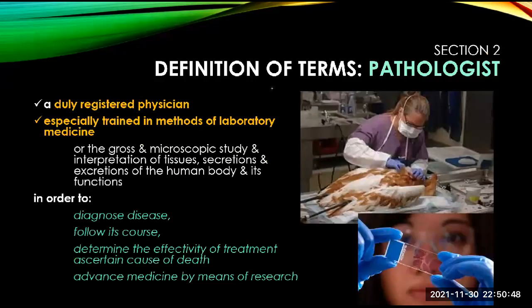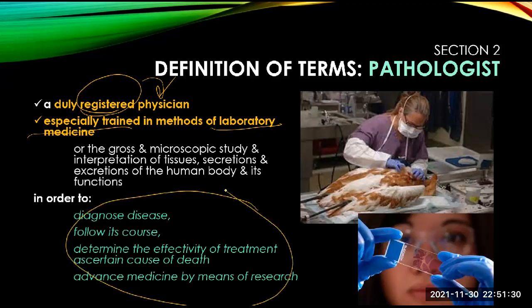Moving on, we have the pathologist. A pathologist is a duly registered physician specially trained in the methods of laboratory medicine — for the gross and microscopic study and interpretation of tissues, secretions, and excretions of the human body and its functions — in order to diagnose disease, follow its course, determine the effectivity of treatment, ascertain the cause of death, and advance medicine by means of research.